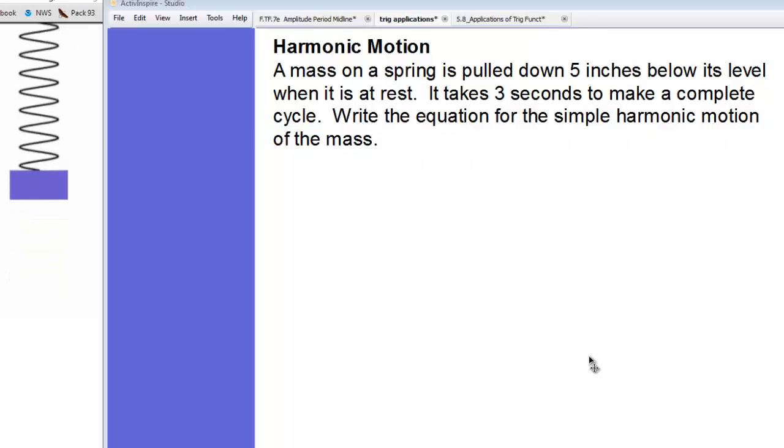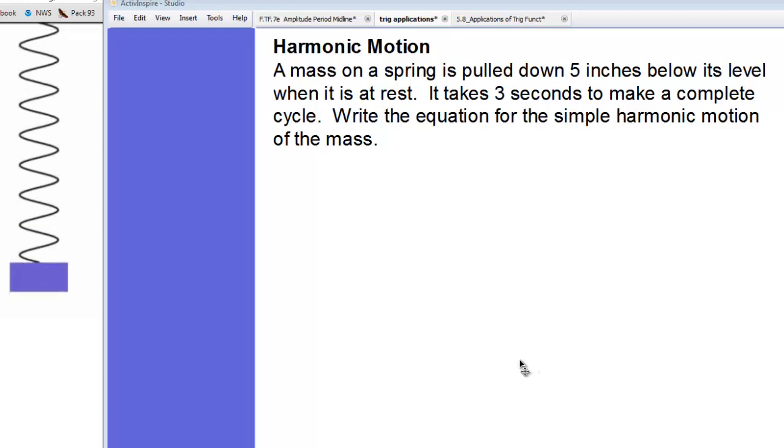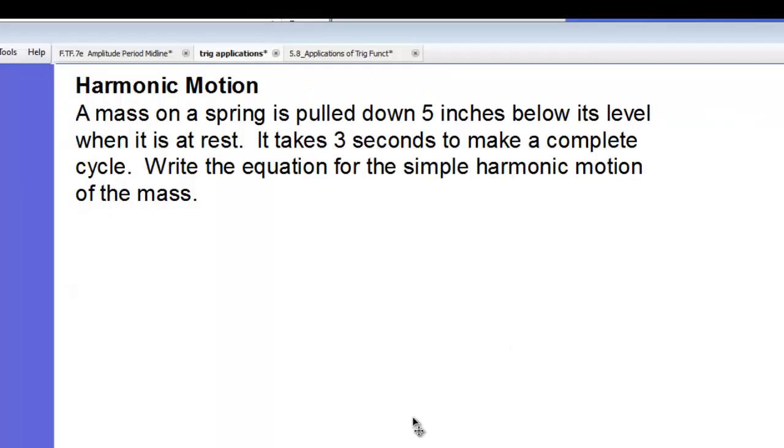Let's take a look at harmonic motion, simple harmonic motion, a mass on a spring moving up and down. A mass on a spring is pulled down 5 inches below its level when it's at rest. It takes 3 seconds to make a complete cycle. Let's write the equation for the simple harmonic motion of the mass.